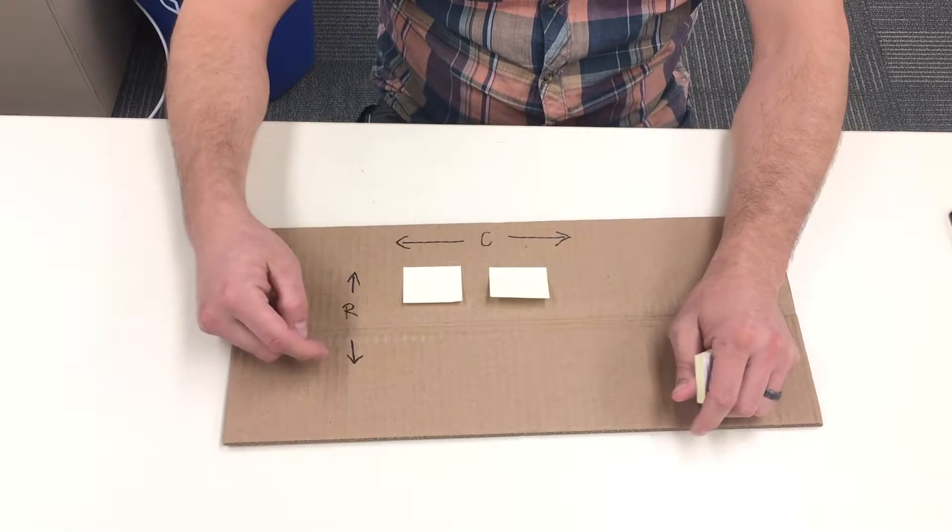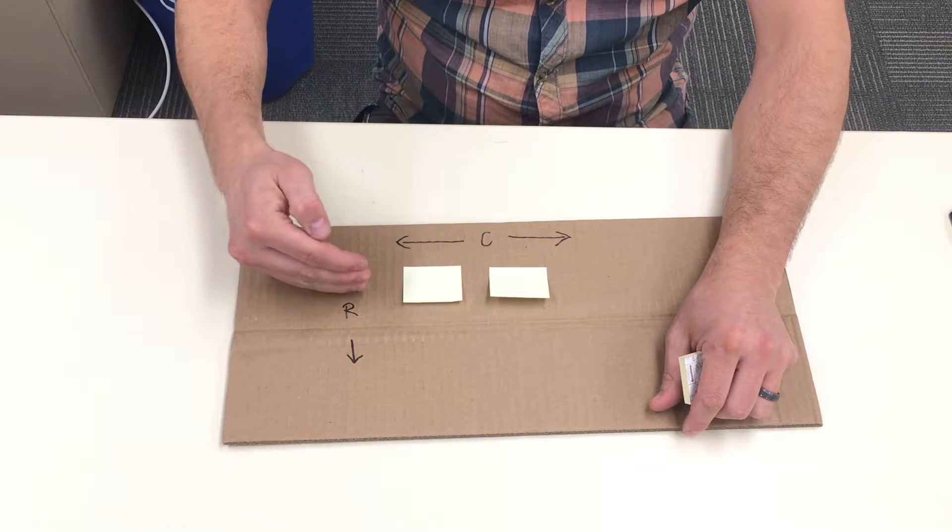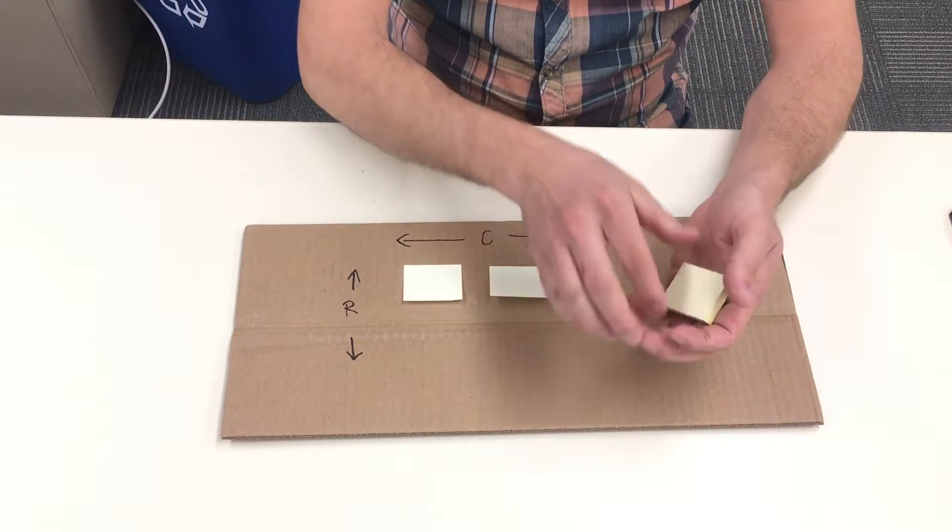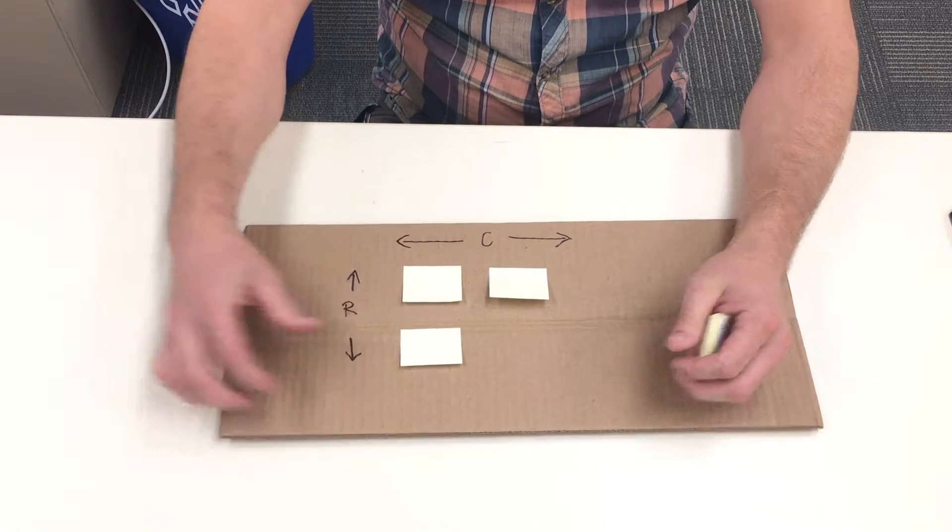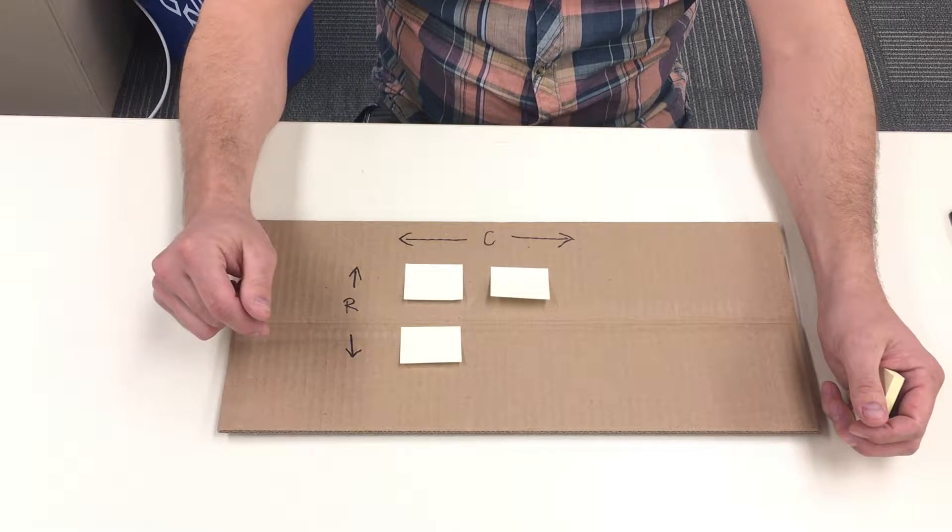Rows are from top to bottom. So right now I have one row and two columns. If I were to add some more sticky notes on here, this would make me have two rows and two columns.